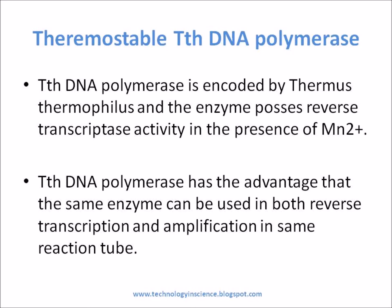Thermostable TTH DNA polymerase. TTH DNA polymerase is encoded by Thermus thermophilus, and the enzyme possesses reverse transcriptase activity in the presence of Mn2+. The advantage is that the same enzyme can be used in both reverse transcription and amplification in the same reaction tube. The main disadvantage is that the average size of cDNA synthesized is 1 to 2 kb, and the use of Mn2+ can lower the fidelity of DNA synthesis.